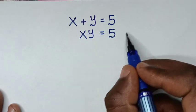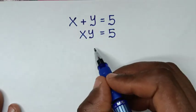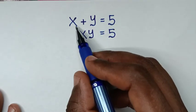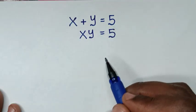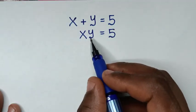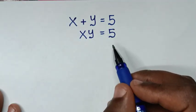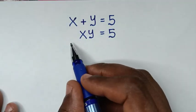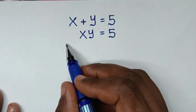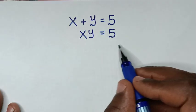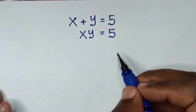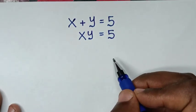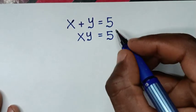Welcome. We are going to solve this math problem: x plus y is equal to 5, and x times y is equal to 5 — to find the values of x and y from these two systems of equations.